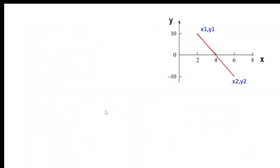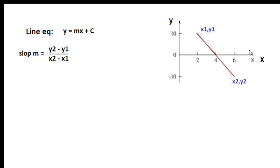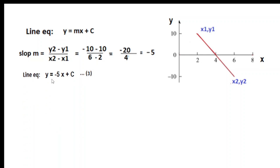Another example where the line is going downward. Same technique: first we find the slope. Remember, the starting point going left to right is (x1, y1) and the end point is (x2, y2). So y2 = -10, y1 = 10, x2 = 6, x1 = 2. Slope = (-10 - 10) / (6 - 2) = -20/4 = -5. This is a negative slope, meaning the line is going down.